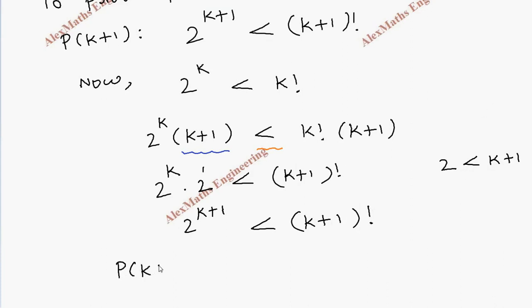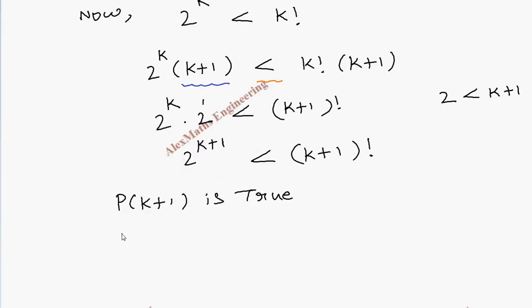So from this we can say, therefore P(k+1) is true, and P(n) is true for all n greater than or equal to 4, and n belongs to natural numbers, by principle of mathematical induction.